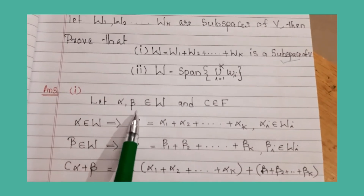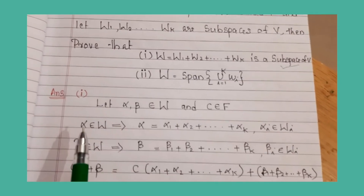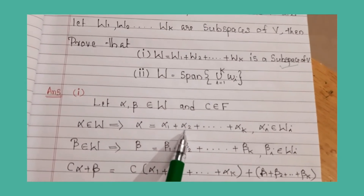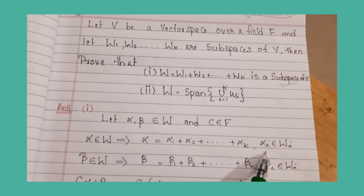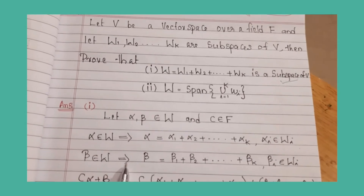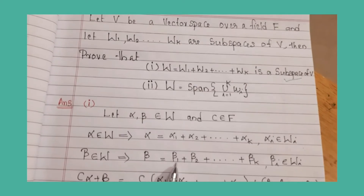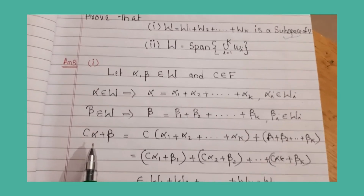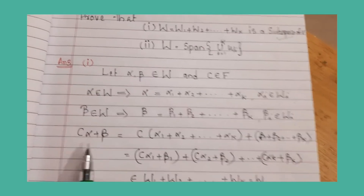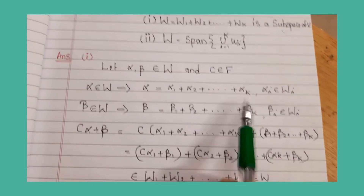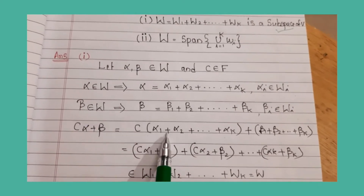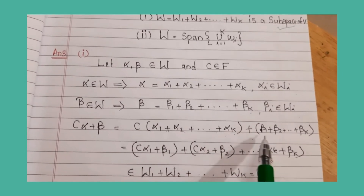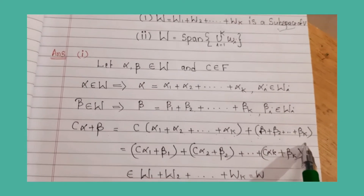For the first part: Let alpha, beta belong to W and c belong to F. Then alpha = alpha1 + alpha2 + ... + alpha k where alpha i ∈ Wi, and beta = beta1 + beta2 + ... + beta k where beta i ∈ Wi. We write c·alpha + beta = c(alpha1 + ... + alpha k) + (beta1 + ... + beta k).